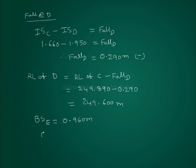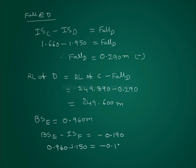The difference between back sight at E and intermediate sight at F is equal to fall value of 0.190 meters. So intermediate sight at F is 1.150, and back sight at E is 0.960. This is satisfied.